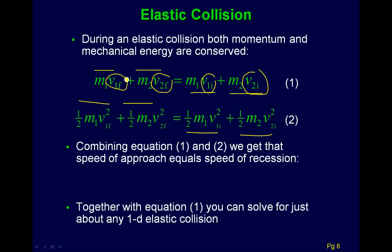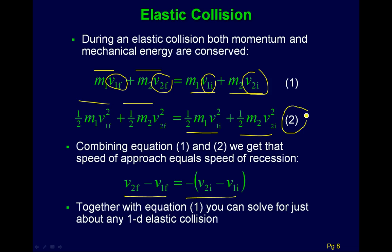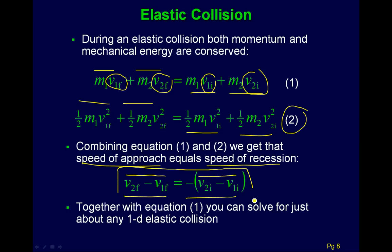One problem is these two equations are kind of nasty. A useful trick is to combine equations one and two to get a simpler equation: the speed of approach equals the speed of recession. This says the relative velocity of the two objects initially equals the relative velocity finally. This equation can be used together with momentum conservation to solve essentially any one-dimensional elastic collision.